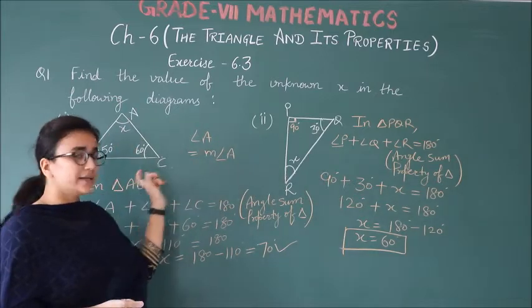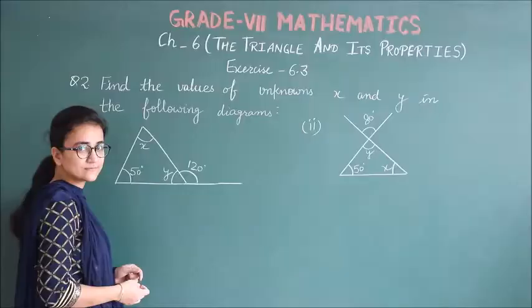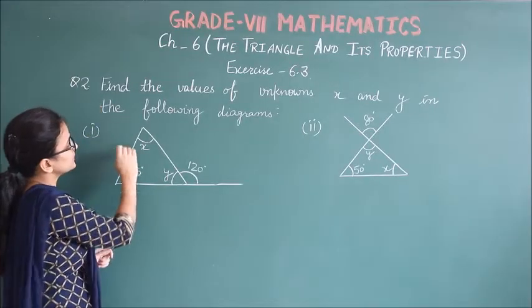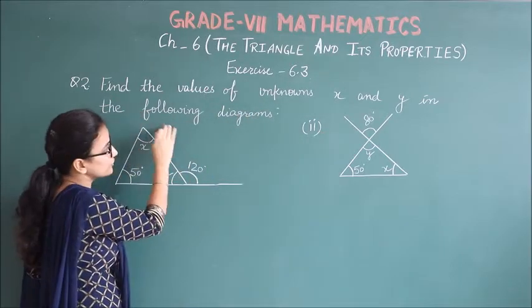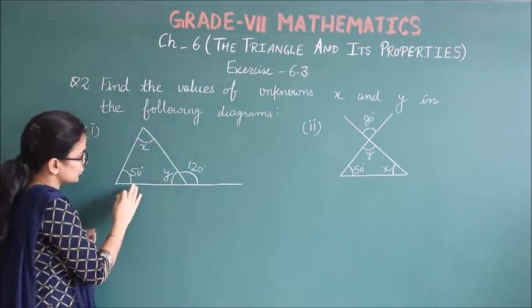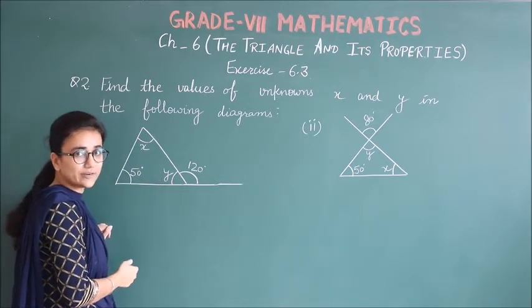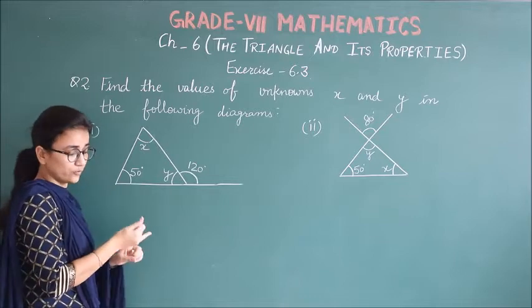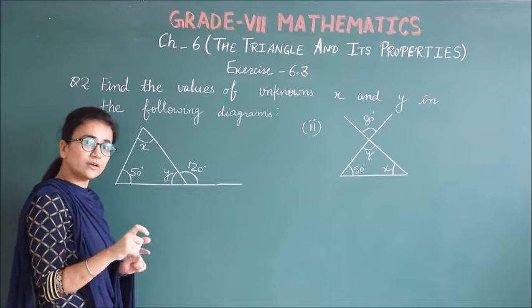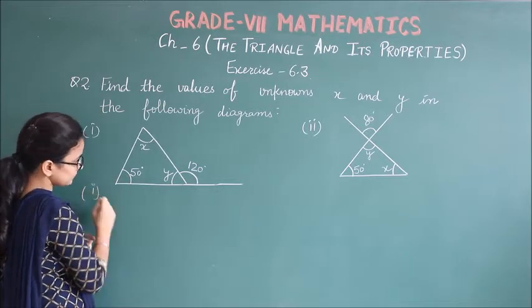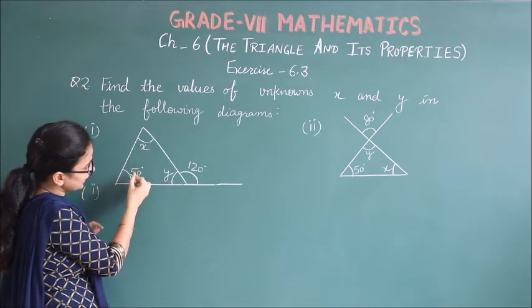We can find unknown angle values using angle sum property. Now let us do second question. Find the values of unknowns x and y in the following diagrams. We have x and y unknown angles using two properties: exterior angle property and angle sum property of triangle.